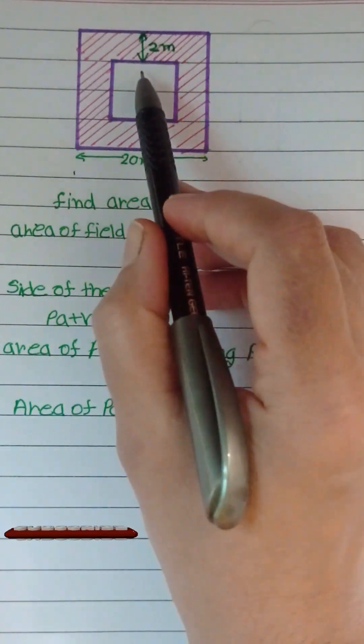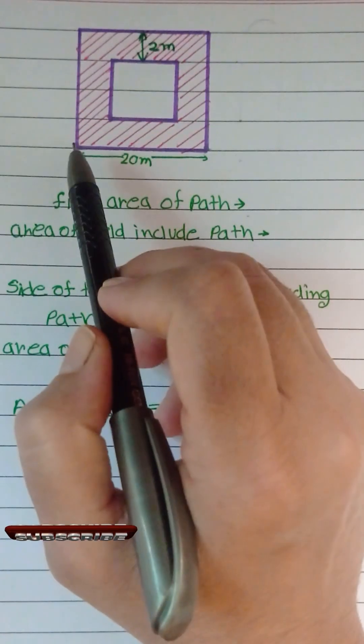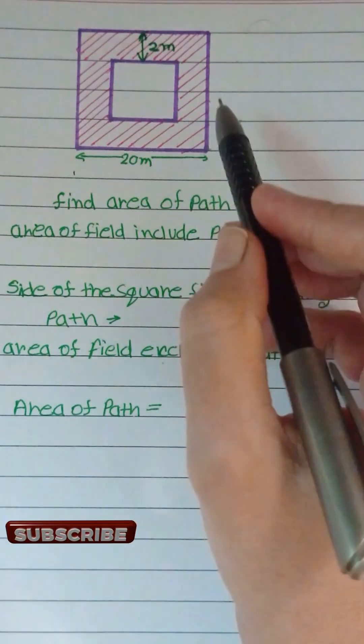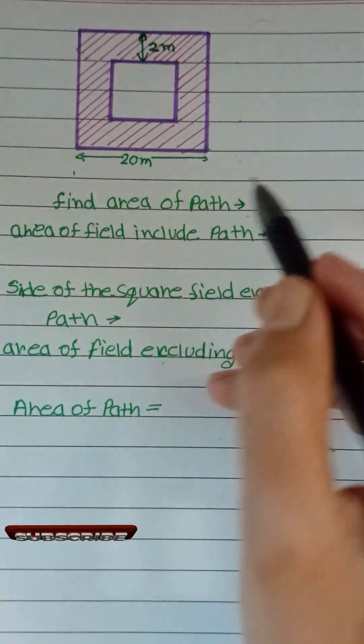Here we have a uniform path which width is 2 meter, which runs around the inside of a square field which side is 20 meter. Find the area of path.